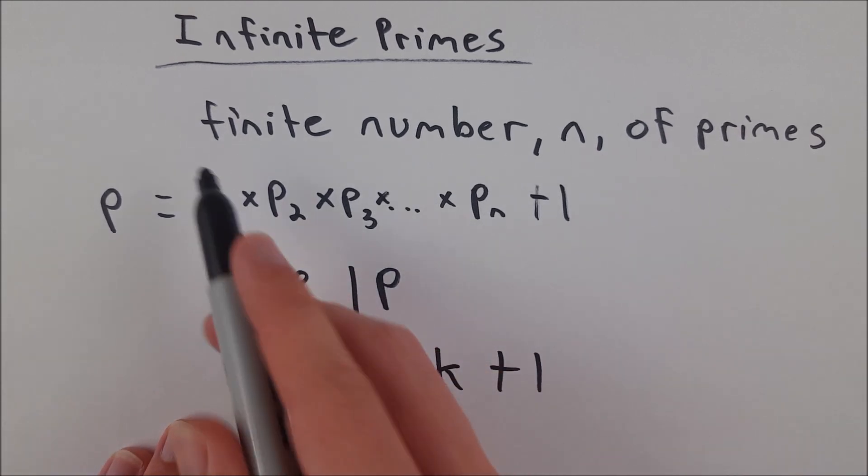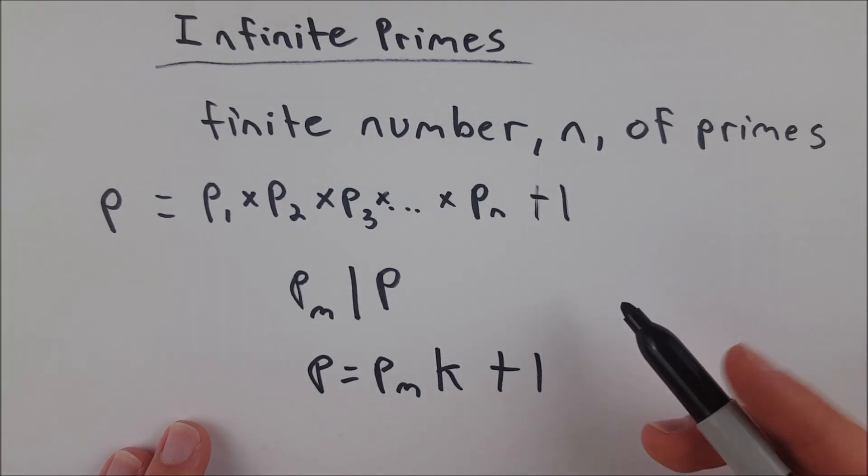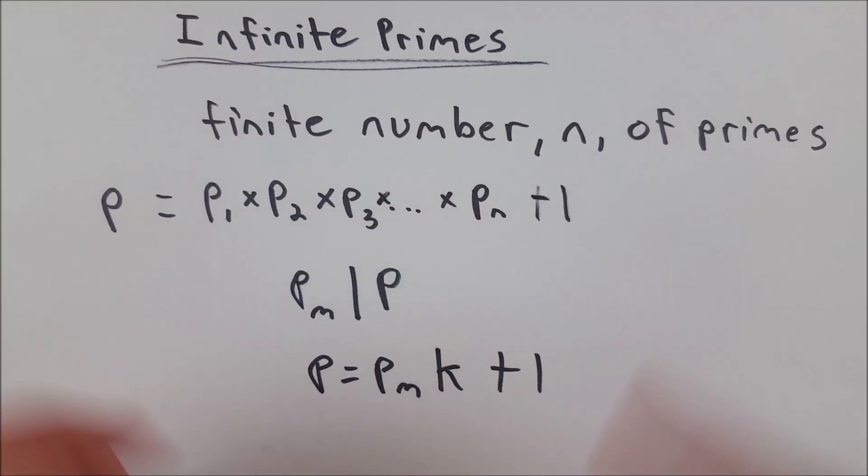And therefore, our original assumption that there's a finite number of primes must be false. Therefore, there are an infinite number of primes.